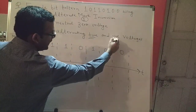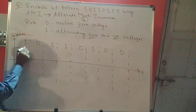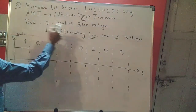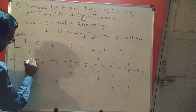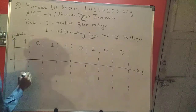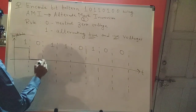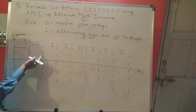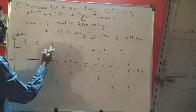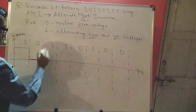It's been clearly mentioned that first it has to be positive and then negative. So if I find a one, I'll represent it using a positive voltage. Now if it's a zero, it represents a neutral zero voltage, so it will be drawn along the time axis. Then I have a one — for the previous one I got a positive voltage, so for the next one I should get a negative voltage, because it should alternate between positive and negative.